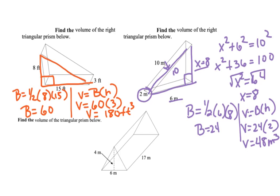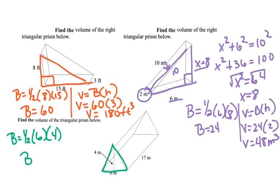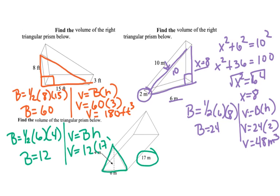Find the volume of the triangular prism. So we'll start with our base. Our base is one half, base times height, 6 times 4. Our base is 12. So now we're going to do our volume: volume equals capital B times H. We know what our base is, which is 12. We're going to times it by 17, our height of our triangular prism, so our volume is 204 meters cubed.